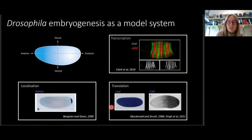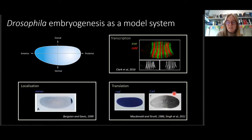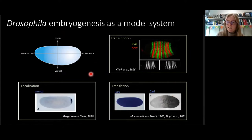For example, in the gene chordal, where the mRNA is expressed ubiquitously, the translation is restricted to the posterior so that only the protein is produced in the posterior. These mechanisms are all combined together to specify the anterior-posterior and also ventral axis of the Drosophila embryo.